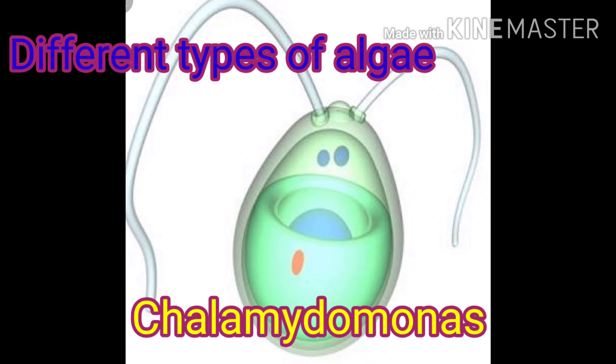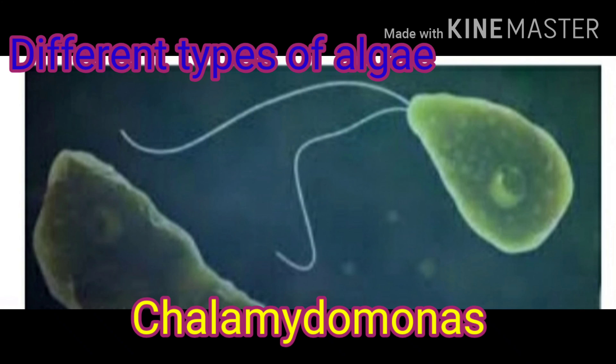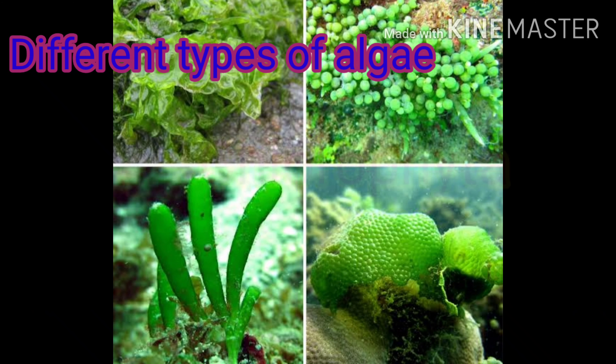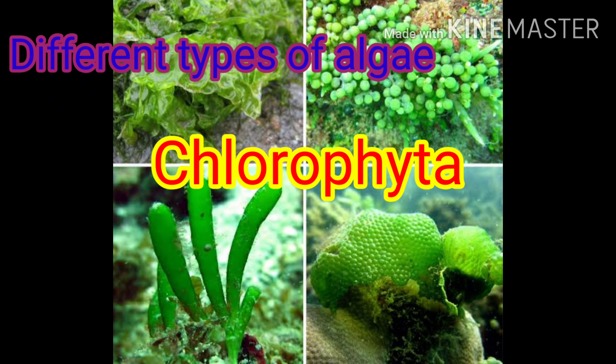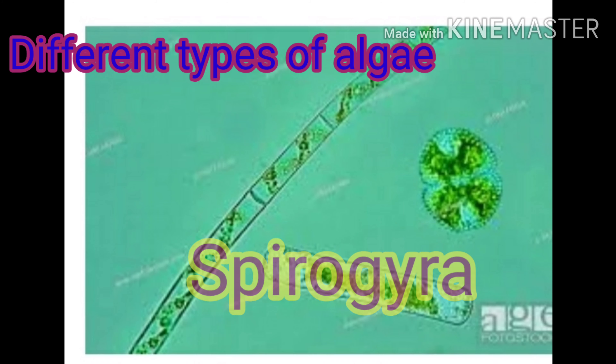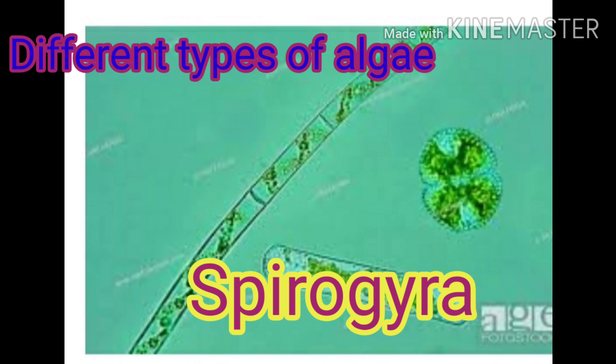Next, let's move to different types of algae. The first one is Chlamydomonas, Chlorophyta and Spirogyra.